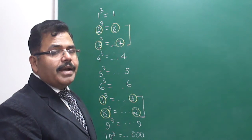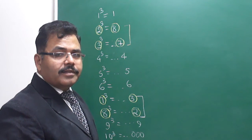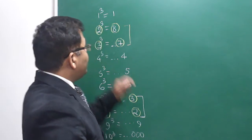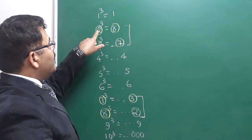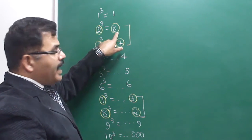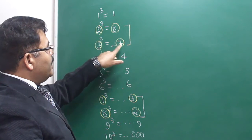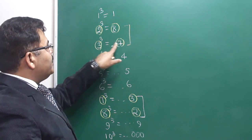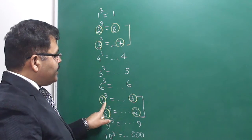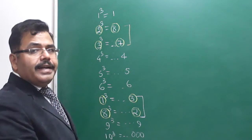Now, suppose you have to find the cube root of any number. If 8 is at the unit place, then the unit place of the cube root must be 2. If there is 7 at the unit place, then the unit place of the cube root must be 3. If it is 3, then unit place must be 7. If it is 2, then unit place must be 8.